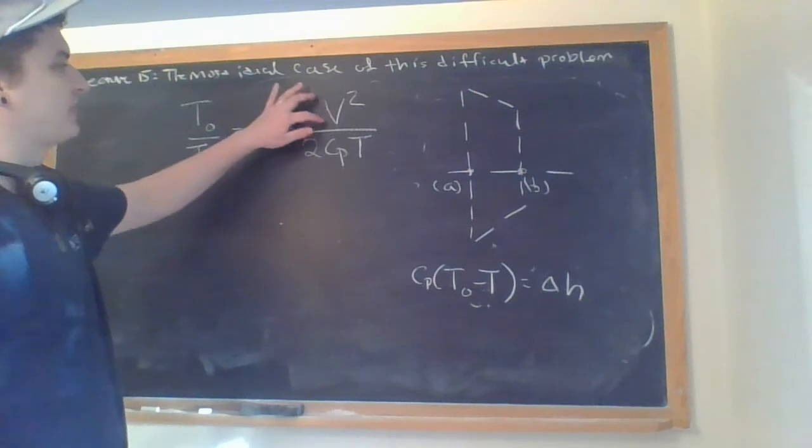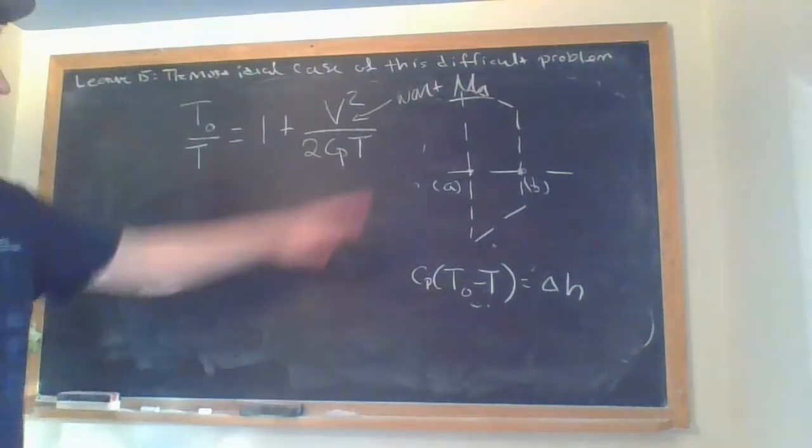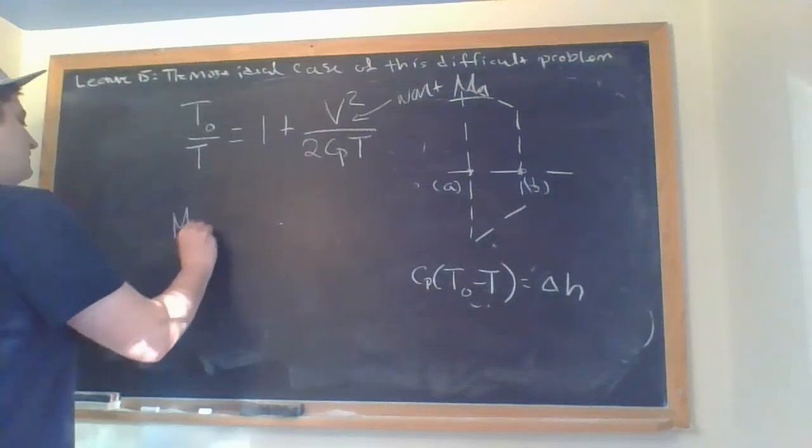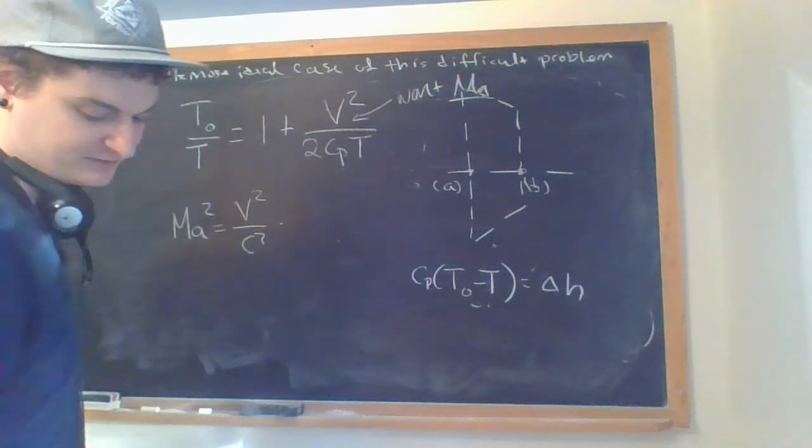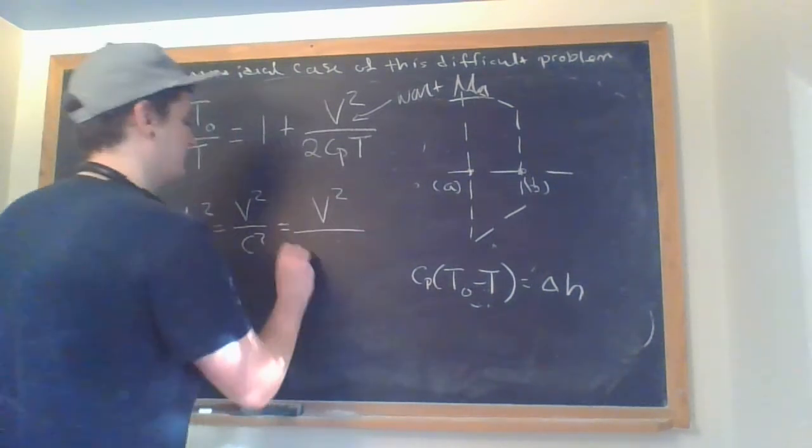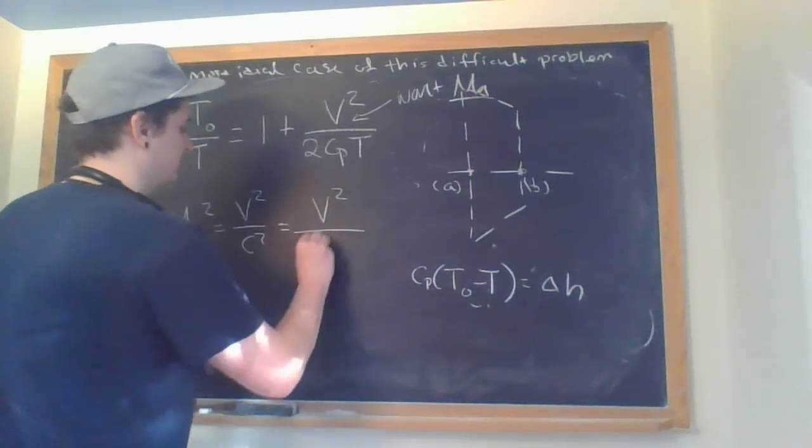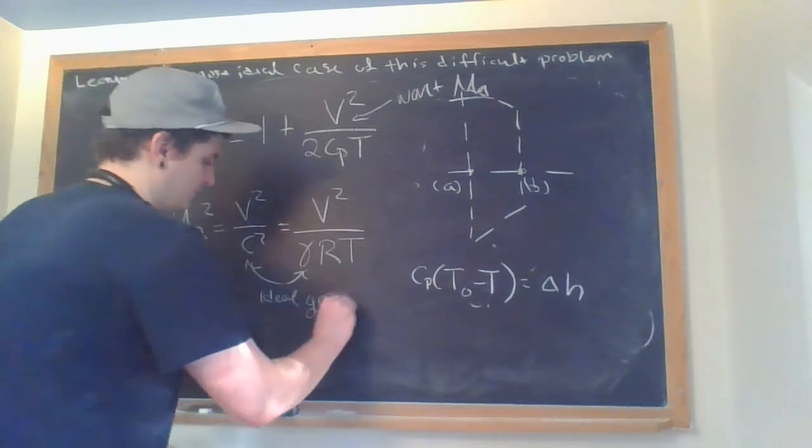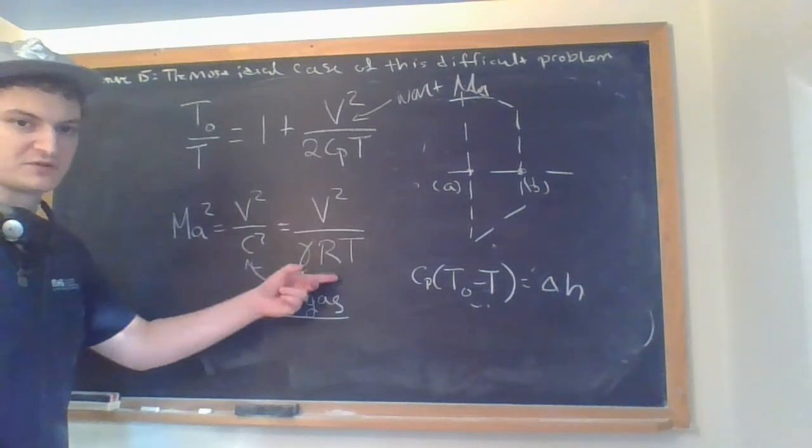Not quite done yet because this velocity we want to turn into a Mach. We want Mach numbers because the Mach numbers will tell us things about supersonic and subsonic flows involved. So then a Mach squared is a velocity squared over c squared. I have a velocity squared there so it makes enough sense to do something like this. And then ideal gas law will tell me this.